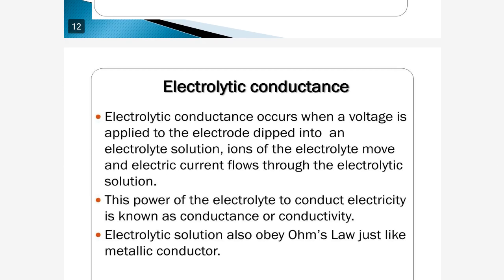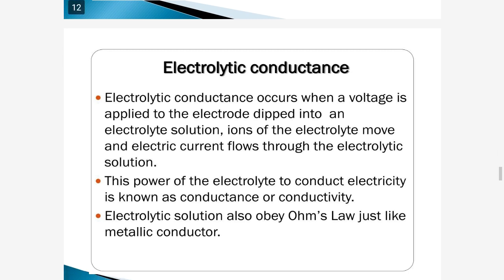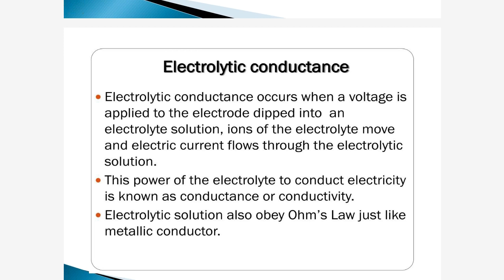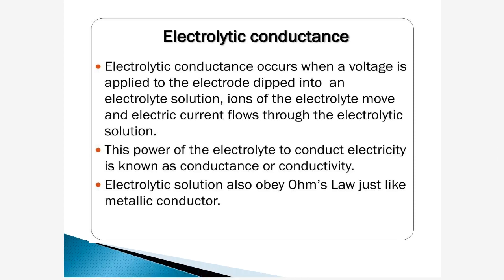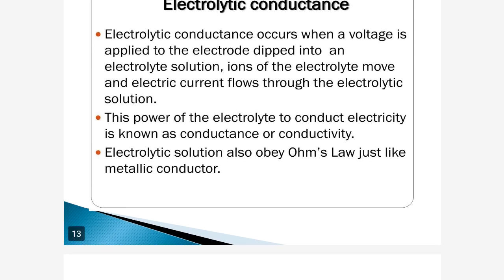Now the main topic: electrolyte conductance. Electrolyte conductance occurs when a voltage is applied to electrodes dipped into an electrolyte solution. Ions of the electrolyte move and electric current flows through the electrolyte solution. Ions move and carry electricity — they are the conductors. The power of the electrolyte to conduct electricity is known as conductance or conductivity.